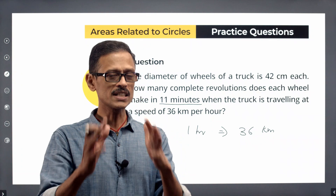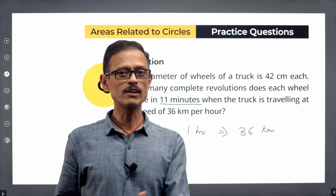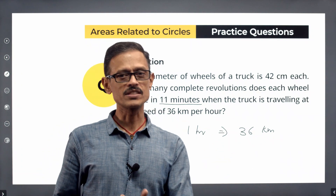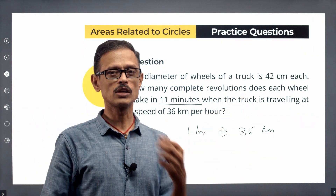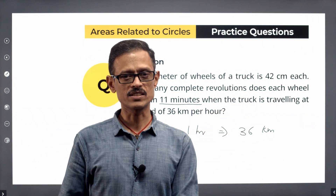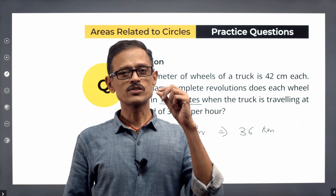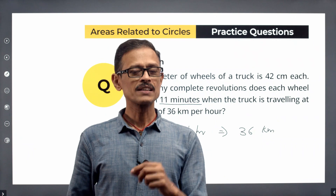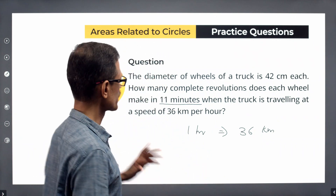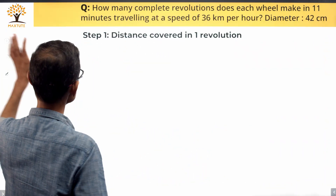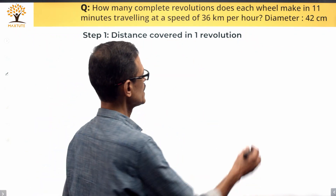A good starting point for questions that involve finding the number of revolutions, distance covered, or speed is to first compute the distance covered by the wheel in one revolution. We're going to be solving this in three steps, and step one is that distance.